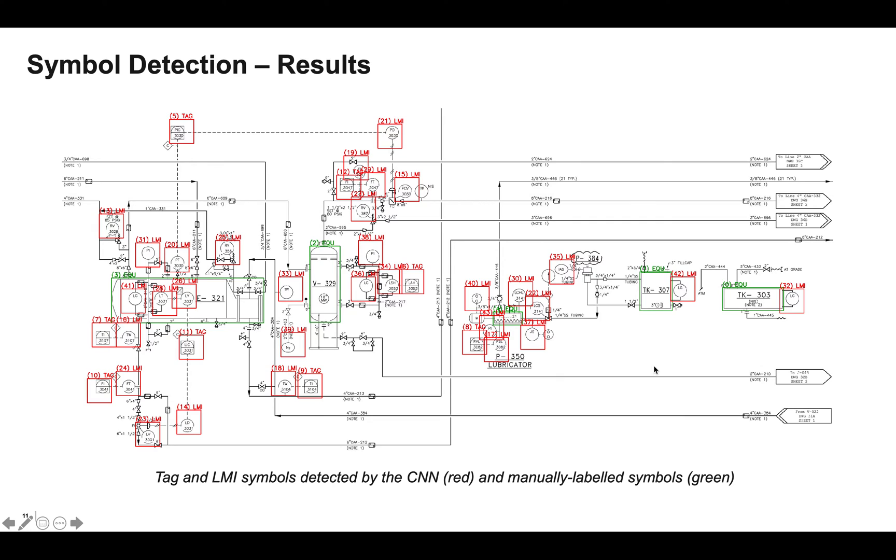These are the results from the symbol detection step. In green, you see the manually labeled symbols given by the user, and in red, you see the symbols that have been detected and classified by the CNN model. Remember that the tag symbols are the circles inside the squares, and the LMIs are just the circles. And you see here that the model does a pretty good job at recovering many of these symbols in the diagram.